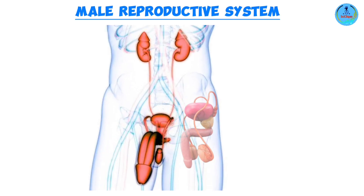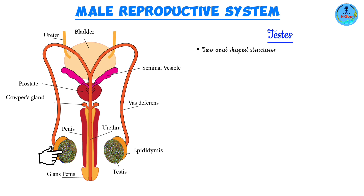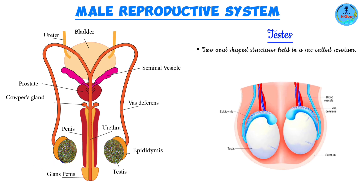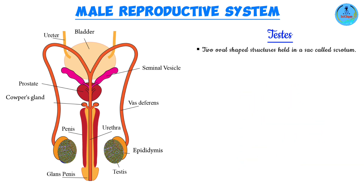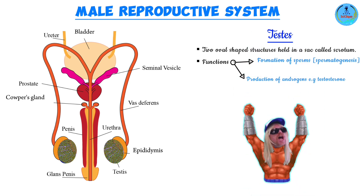Let us discuss the male reproductive system, starting off with the testes. These are two oval-shaped structures held outside in a sac called the scrotum, which offers protection to the testes. The testes have two main functions: function number one is the formation of sperm, a process called spermatogenesis, and function number two is the production and secretion of male hormones, collectively known as the androgens, the most important of which is testosterone.